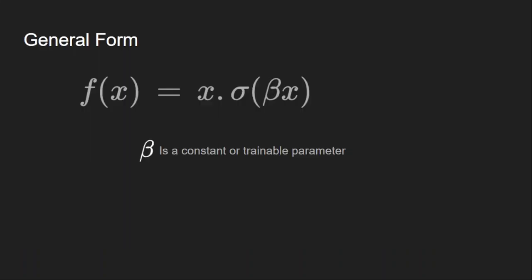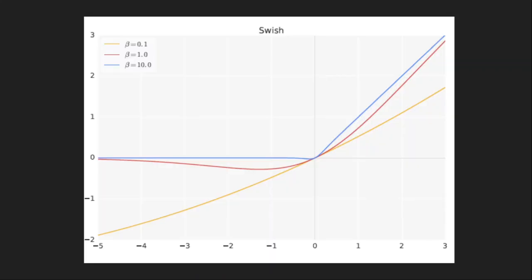The more general form of the Swish activation has an additional parameter called beta, which you can keep as a constant or as a trainable parameter. If you decrease beta below 1, the function becomes almost linear. If you increase beta above 1, it almost becomes like ReLU. So you can view Swish as an interpolation between the linear function and ReLU, with the degree of interpolation controlled by beta.